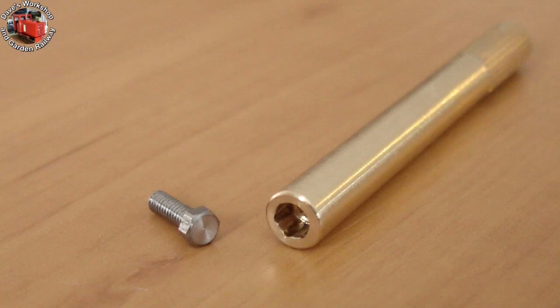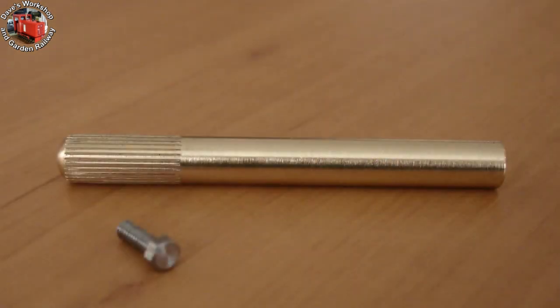Here's the finished spanner. I turned the OD down to 7/32 inch, and it's 2 inches long just like my commercial 10BA spanner. Not having a knurling tool, I racked a straight pattern with a V-tool set on its side in the lathe.